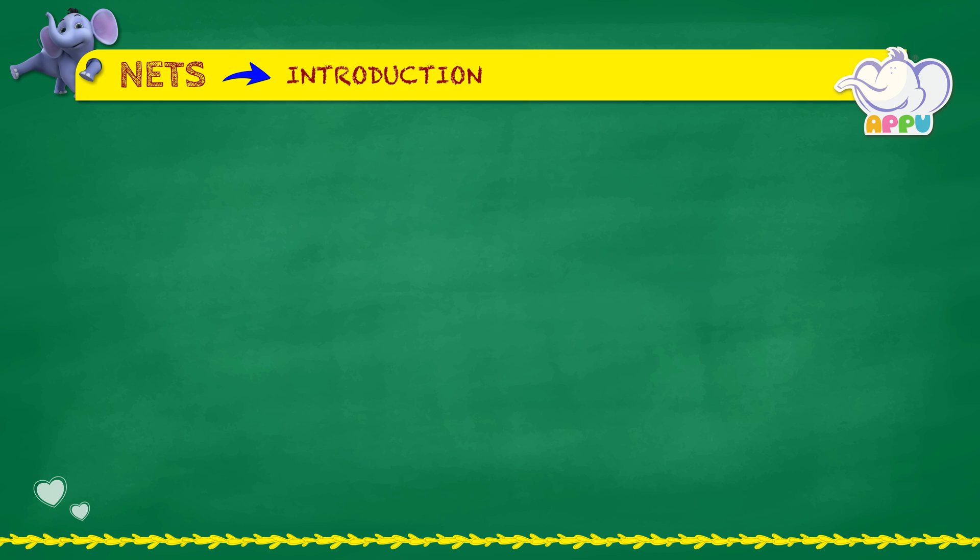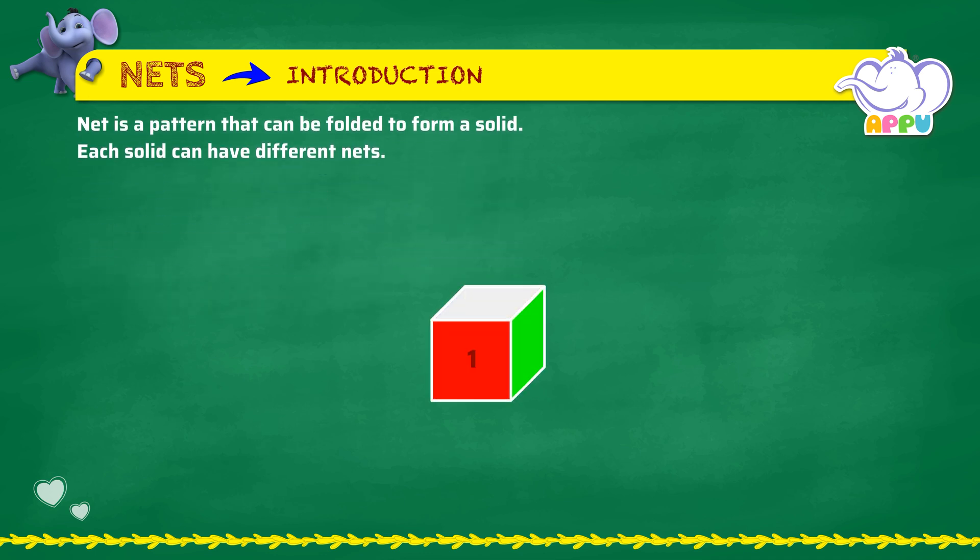Nets - Introduction. A net is a pattern that can be folded to form a solid. Each solid can have different nets. Let's see the net of a cube.